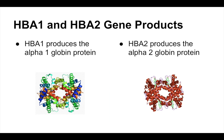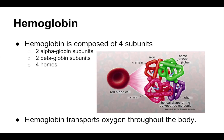HbA1 and HbA2 are two genes required to produce the correct amounts of the alpha subunits of hemoglobin. HbA1 expression results in the production of the alpha 1 subunit, while HbA2 expression results in alpha 2 subunit production. With these two alpha subunits, two beta subunits and four heme groups make up the hemoglobin molecule, which is required to carry oxygen in red blood cells.